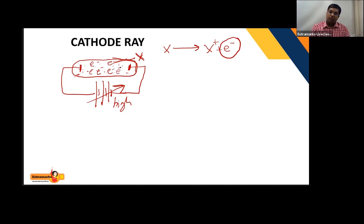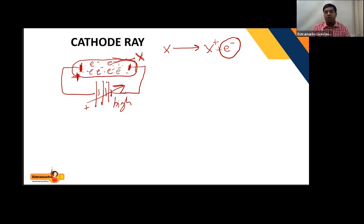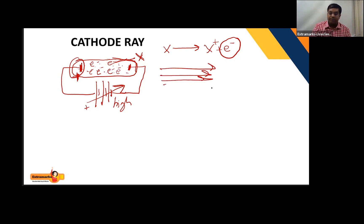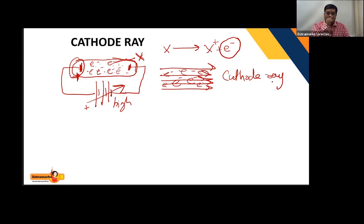These electrons collectively move towards the positive plate — the plate connected to the positive end of the battery. The electrons produced in this ionization collectively travel as a beam towards the positively charged plate. This beam of electrons is called a cathode ray.